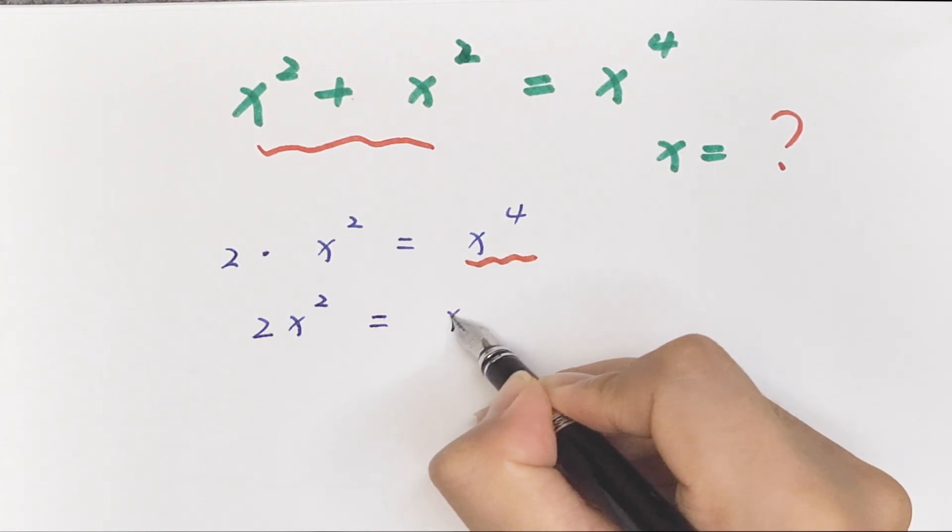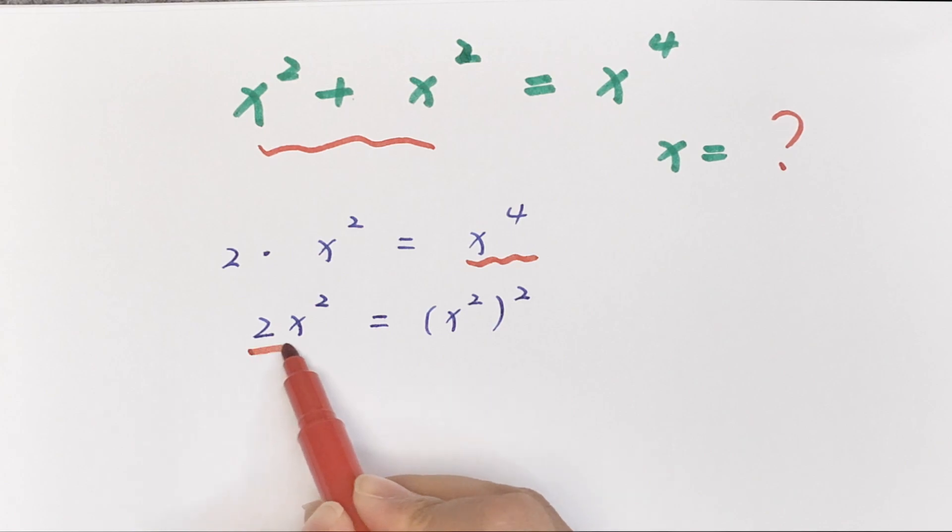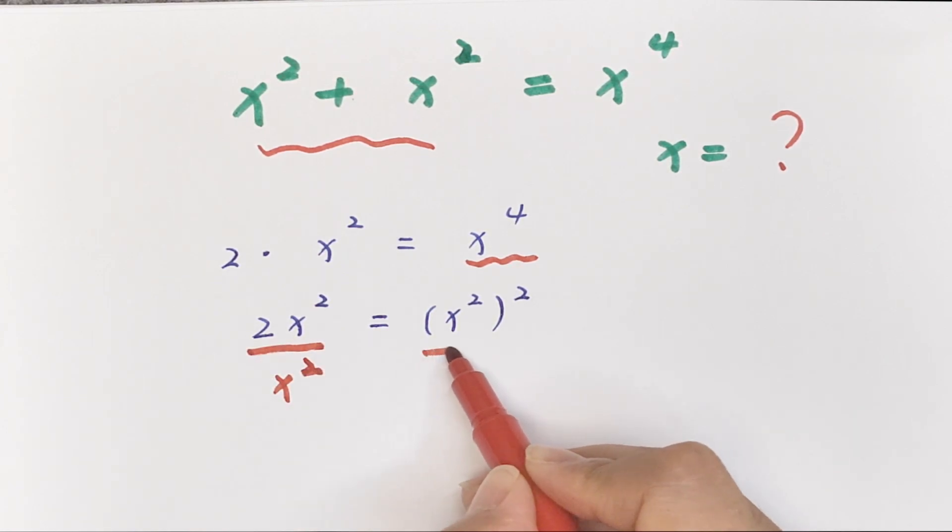2x squared equals x to the power of 4, which is x squared bracket to the power of 2. So we divide it by x squared on both sides.